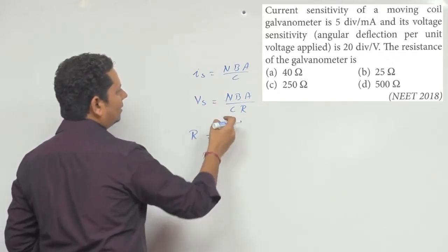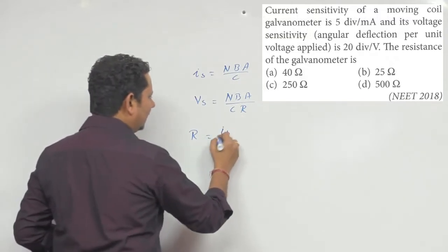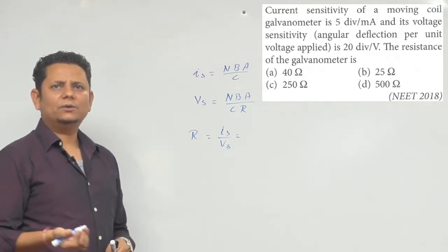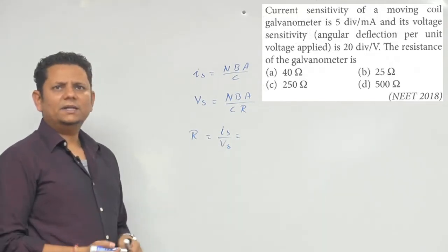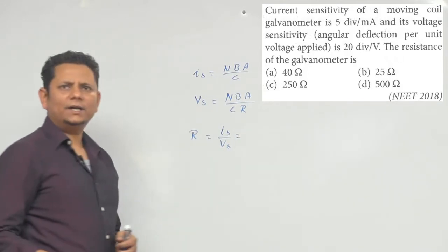तो R will be equal to Is divided by Vs और यह दोनों value दे रखी है, वो data डालके answer आजाएगा. आपने को current की sensitivity दी हुई है 5 division per milliampere.